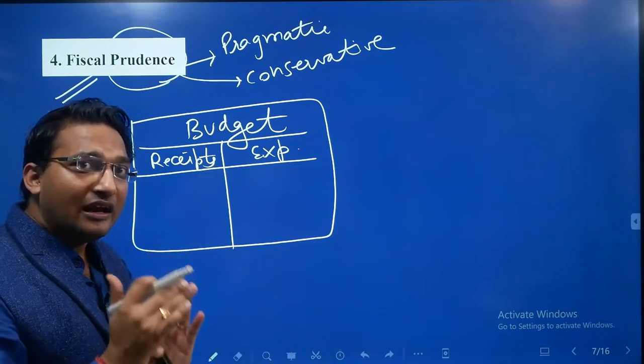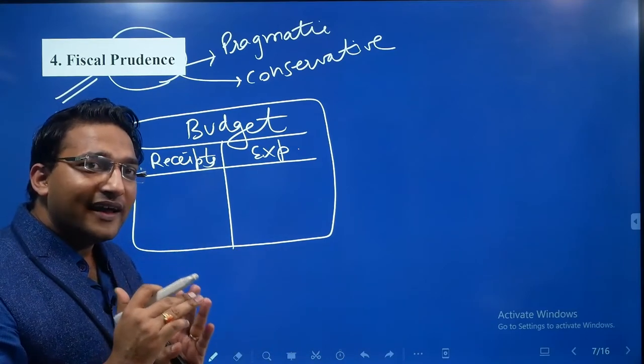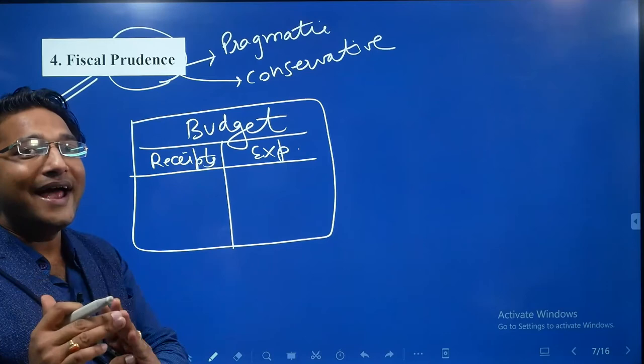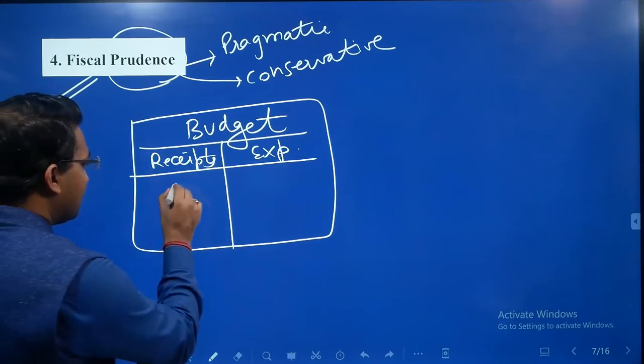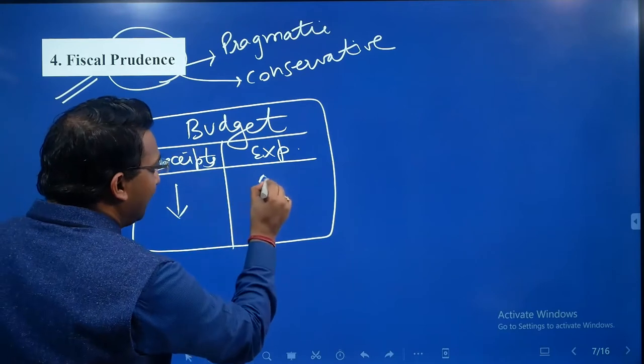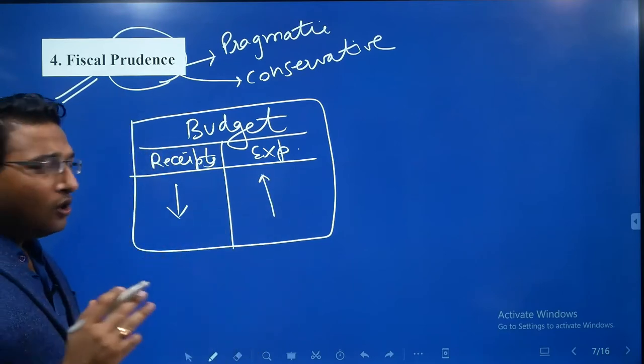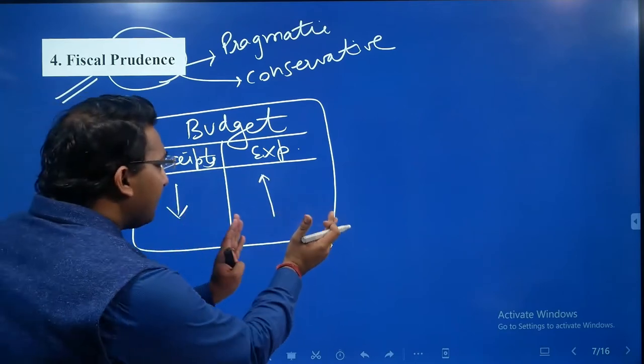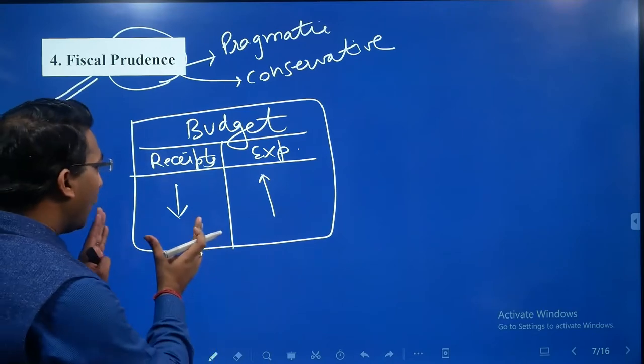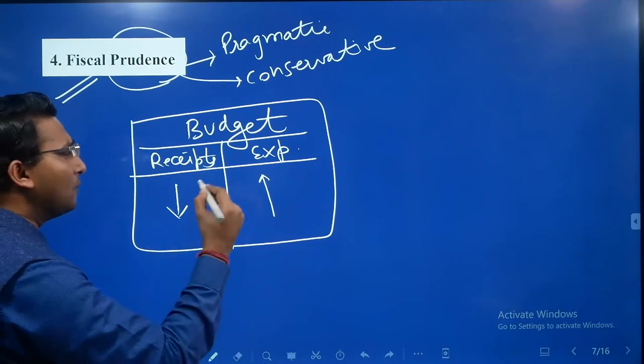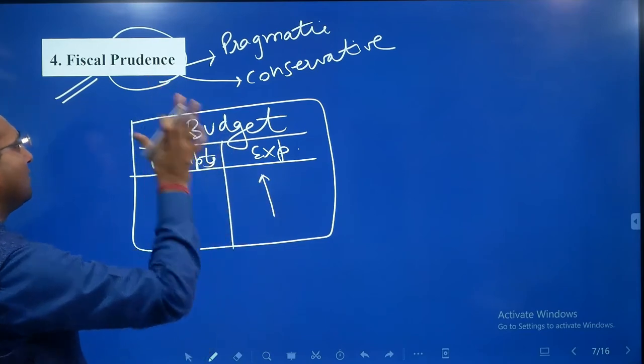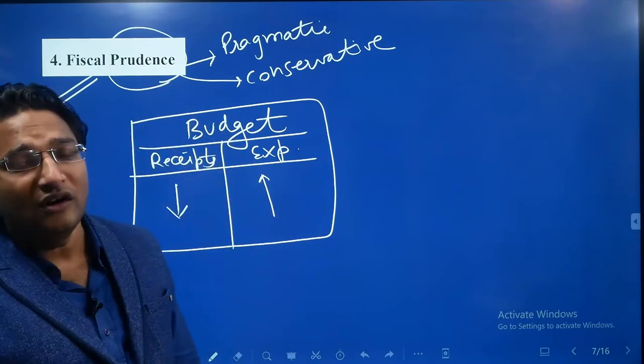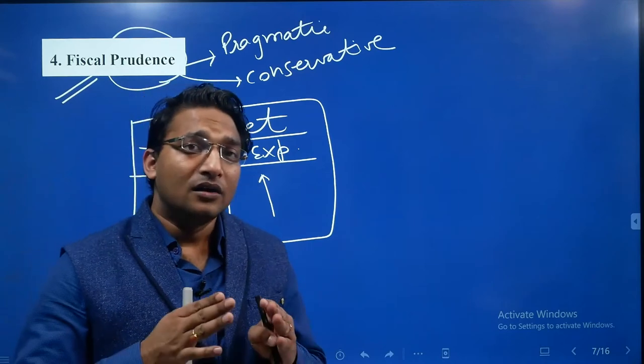we should anticipate unforeseen bad situations in the future because of which receipts can come down and expenditure can increase. So keeping a high estimate of expenditure and a low estimate of receipts, and accordingly making the budget—this concept is called fiscal prudence.